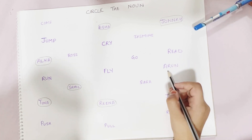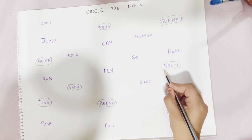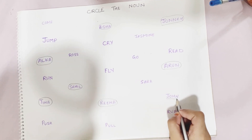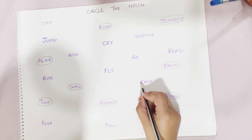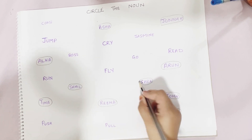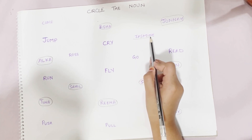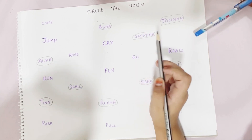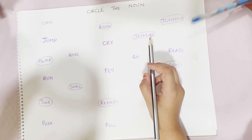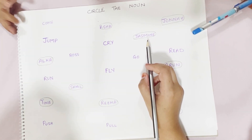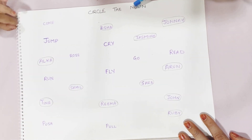Nain — read — no, it's not a noun. Arun — very nice. John — very good. Ruby — very nice. Sarah — Sarah is a name of a girl. Jasmine — yes, Jasmine is a name. Actually, it's the name of a flower, but usually people keep it for their daughters. Next — go. So, did you understand what a noun is? Yes — a noun is a name.